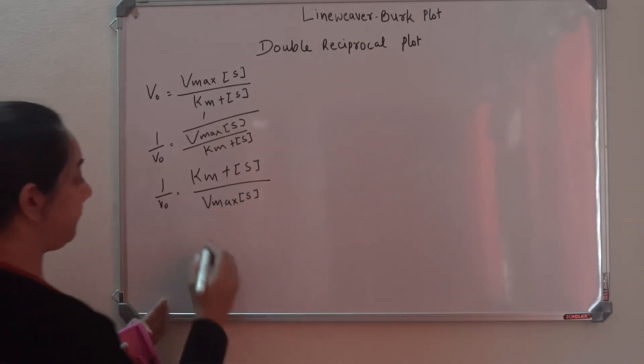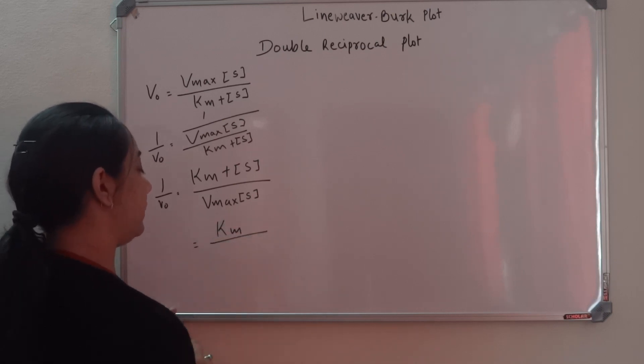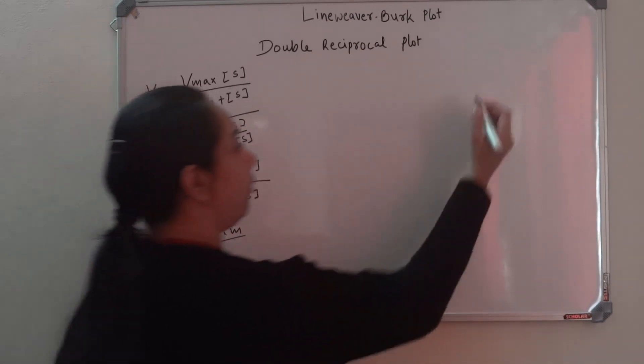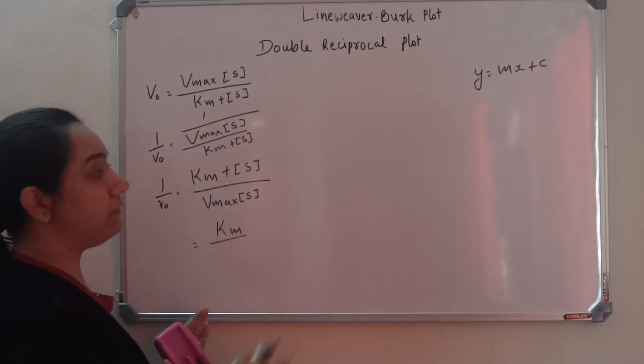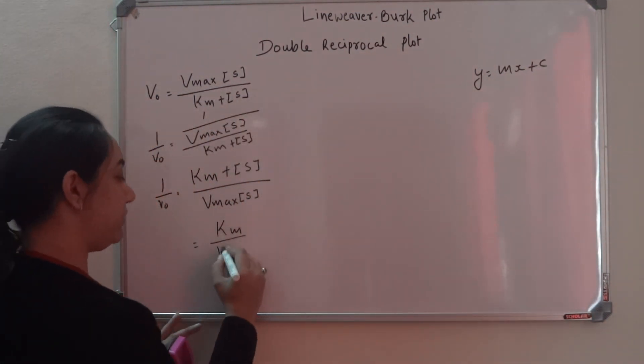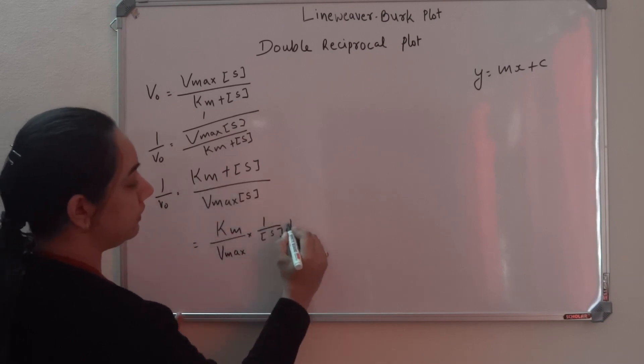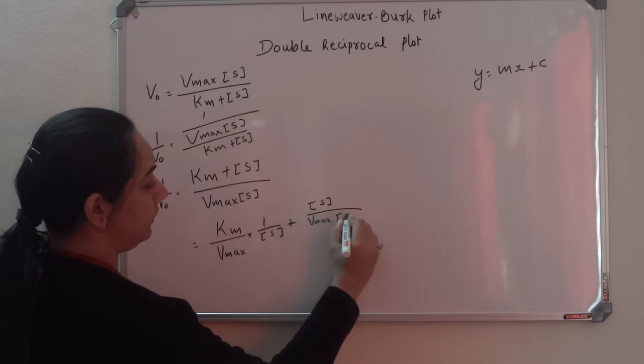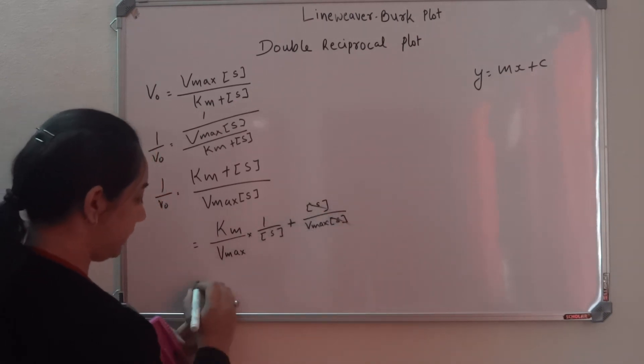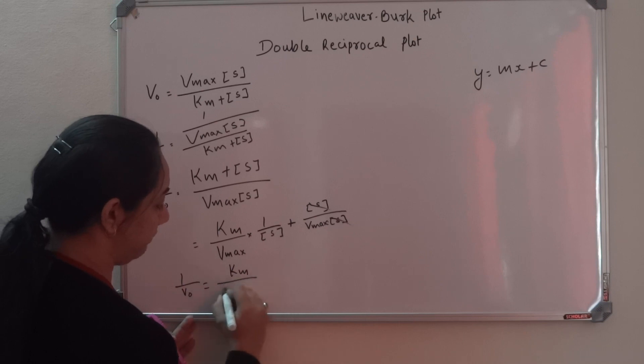Let's further simplify this. We're trying to arrange this equation in the form of y equals mx plus c. So we'll have Km by Vmax into 1 by S, plus substrate concentration by Vmax into S. The S's cancel out. So 1 by V0 equals Km by Vmax into 1 by S plus 1 by Vmax.